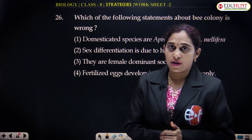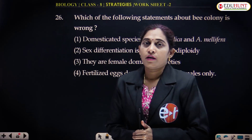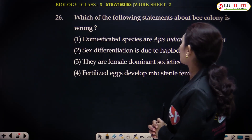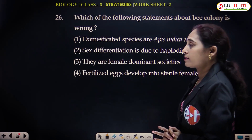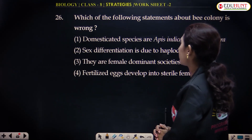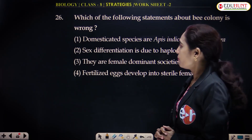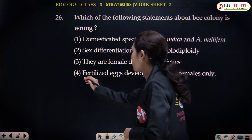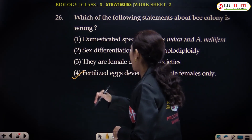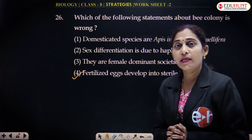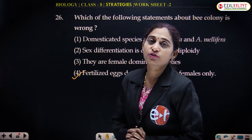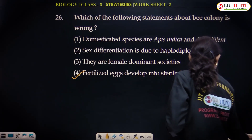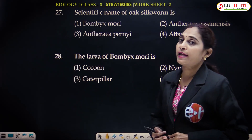We have started multiple choice questions based on these strategies. In this session we will answer the remaining questions. First question: which of the following statements about a bee colony is wrong? Domesticated species are Apis indica and Apis mellifera — that is a correct statement. Sex differentiation is due to haplodiploidy — that is true. Fertilized eggs develop into sterile females only — this is the wrong option, because fertilized eggs develop into females, but only the queen bee is fertile; worker bees are sterile.